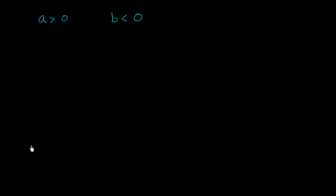And you say, sure, shoot away — give me some questions about math expressions. And she says, all right, so you have two integers, integer a and integer b. She tells you that integer a is greater than 0, and integer b is less than 0. Then she says that we also know that a over b is greater than a times b.